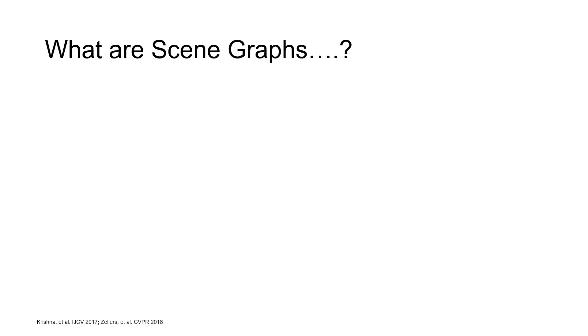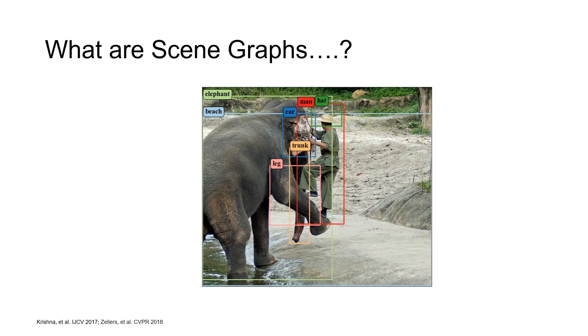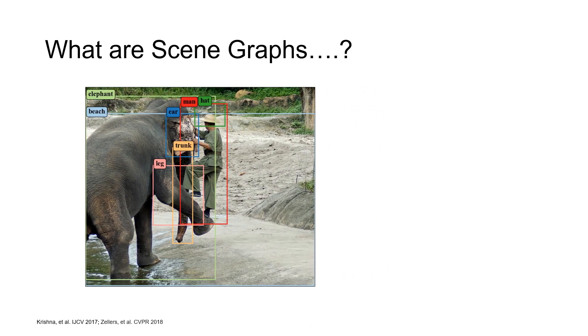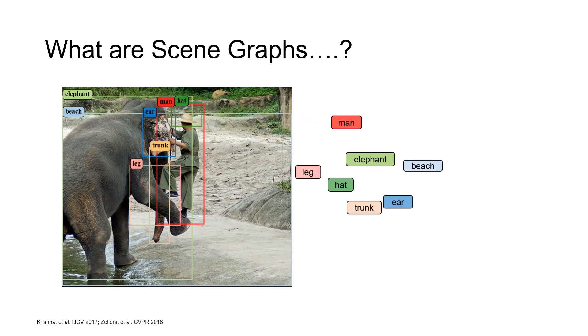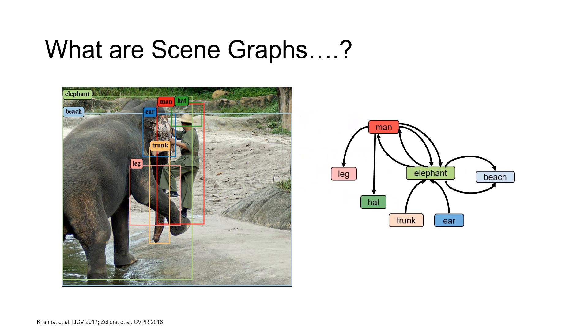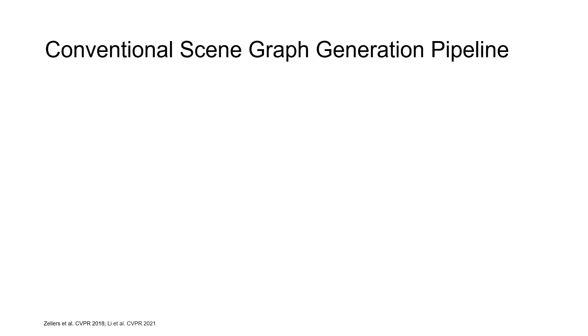Scene graphs are graphical representations that capture various objects within an image along with the relational dependencies between them. Let's review the conventional pipeline for scene graph generation.